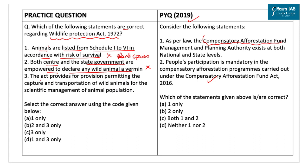The third statement says the Act provides for a provision permitting the capture and transportation of wild animals for scientific management of animal population. This statement is correct. An amendment in 1982 introduced a provision permitting the capture and transportation of wild animals for their scientific management, and thus statement 3 is correct. As only the third statement is correct, the correct code is option C.